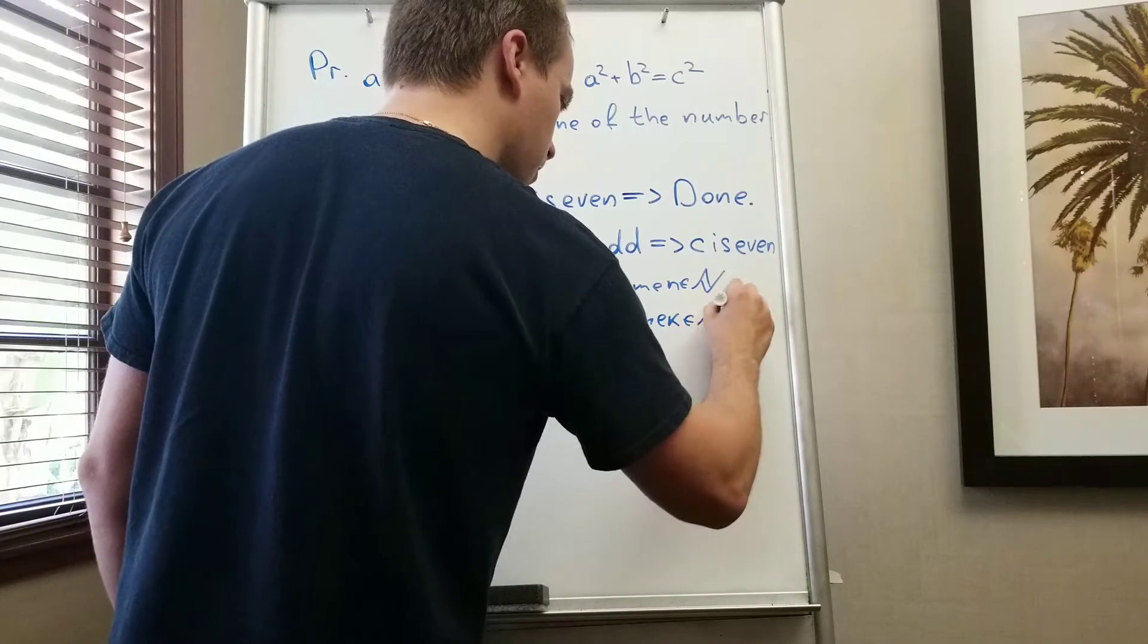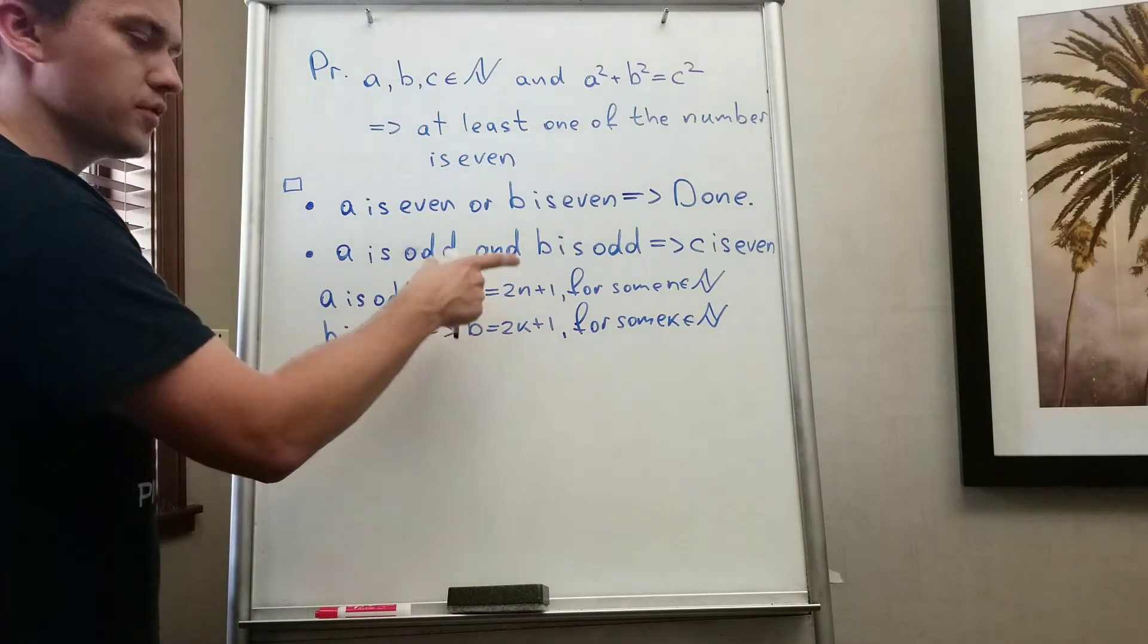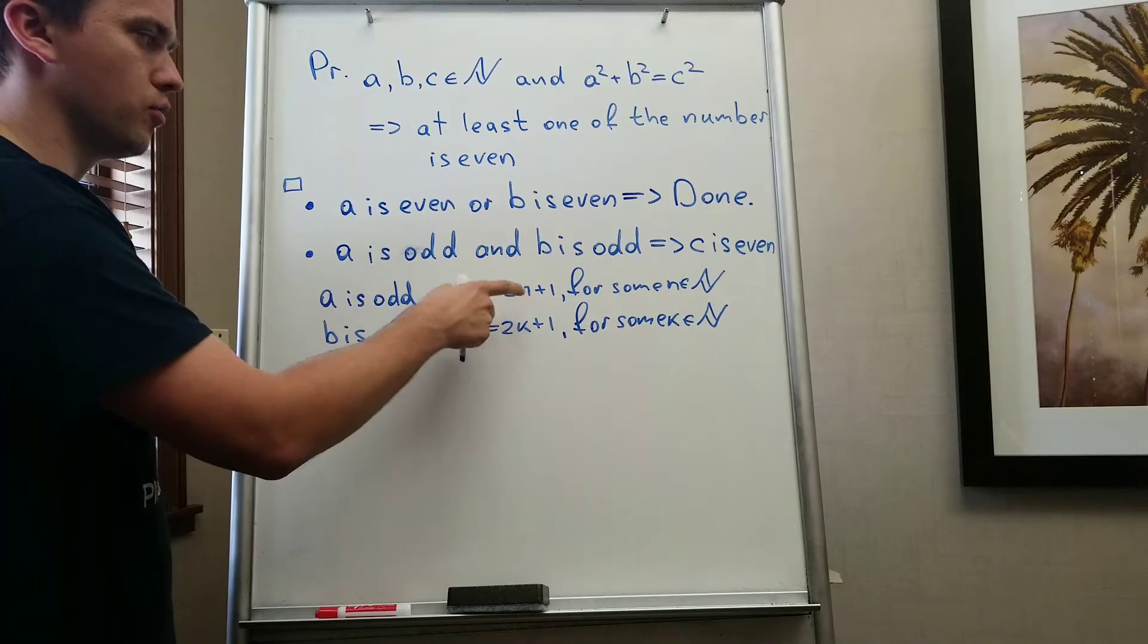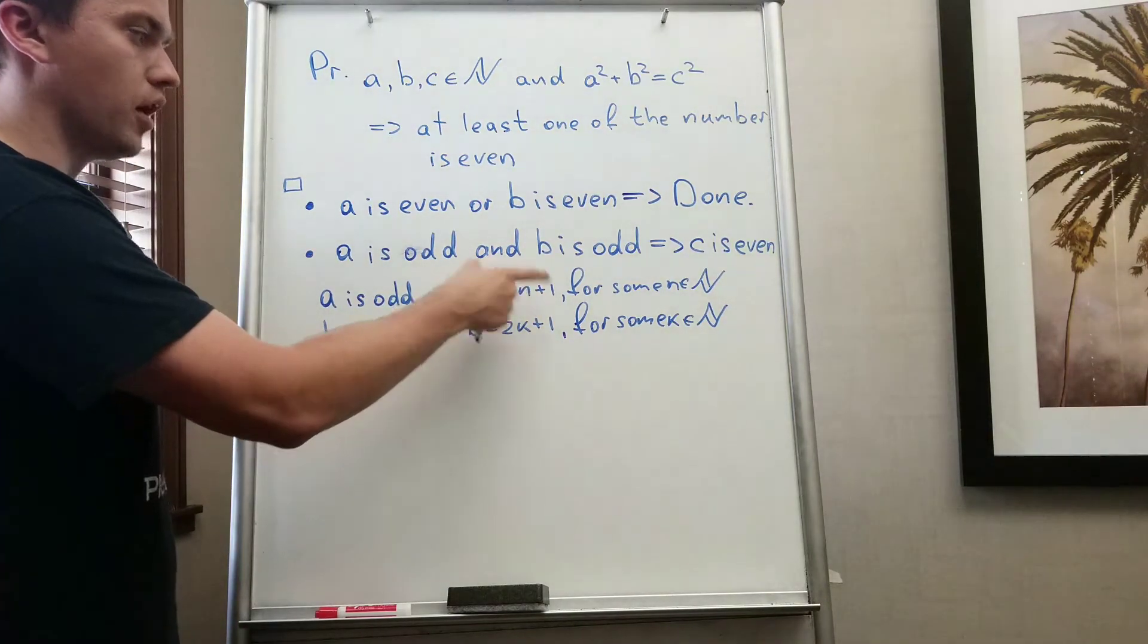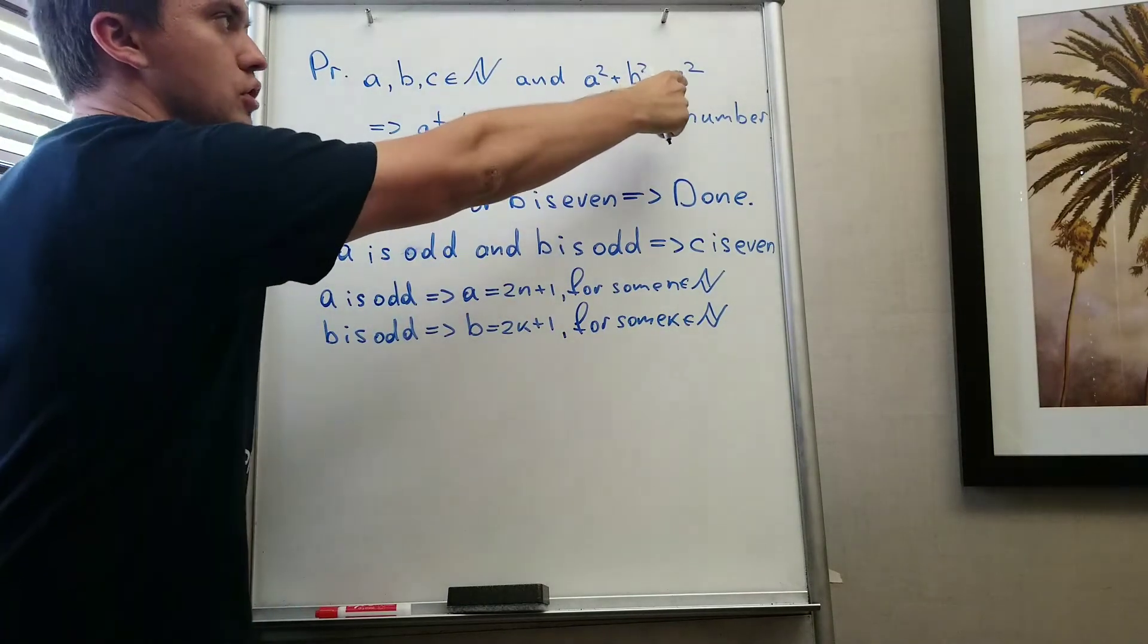k belongs to natural. When we have these two numbers, we actually write the definition of what does it mean for a number to be odd. And then I'm going to use this assumption and by using this assumption I'm going to show that c is even.